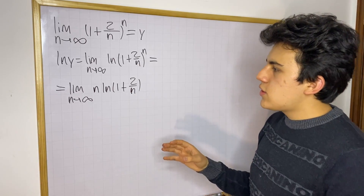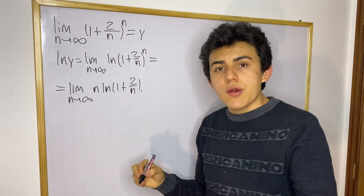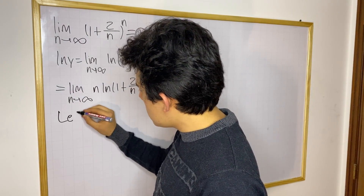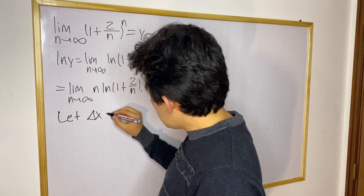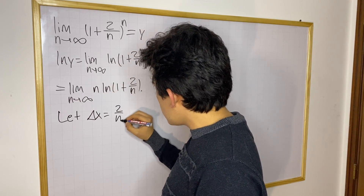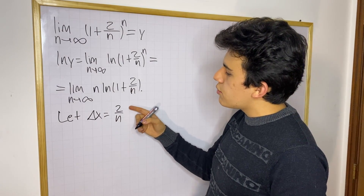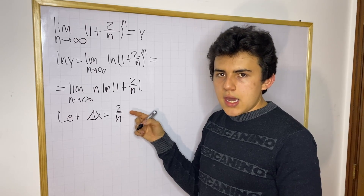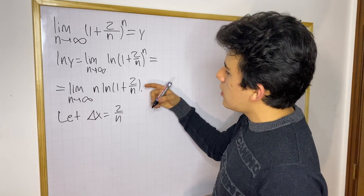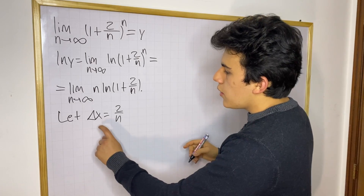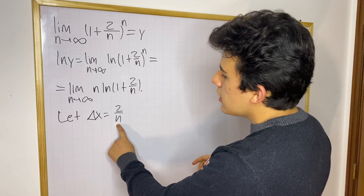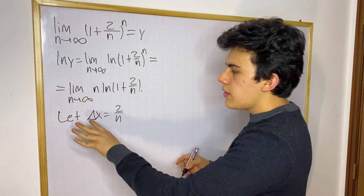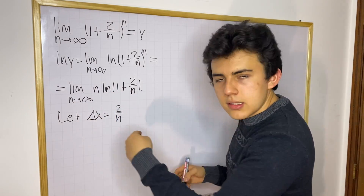Now if we really want to start solving this limit, we're going to define a new variable. I'm going to let δx be equal to 2/n. If you were computing Euler's number this would be 1/n, but we have 2/n, so we need to include the 2. You're going to see why we need to consider the number above n. If we let δx equal 2/n, we can now substitute δx into this limit.